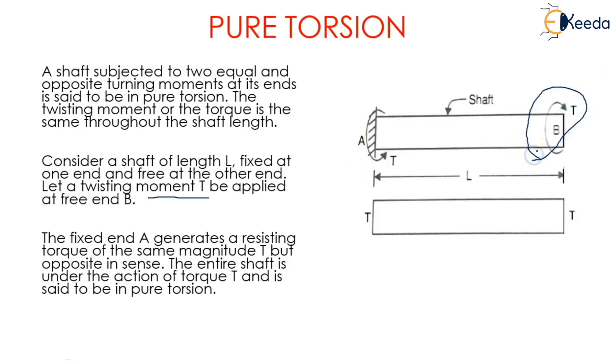The fixed end A generates a resisting torque of the same magnitude T but in the opposite sense. The entire shaft is under the action of torque T and is said to be in pure torsion. When we apply a twisting moment at B, a resisting moment at A is generated, and this moment will be the same in magnitude but opposite in direction.